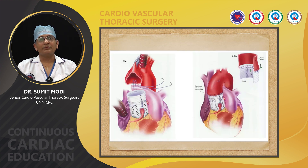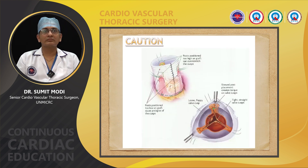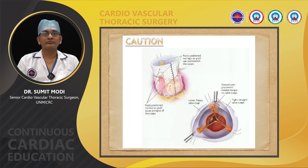The distal end of the prosthetic graft is sutured to the proximal arch with 4-0 or 5-0 Prolene suture in a continuous or semi-continuous fashion. Re-warming is started, de-airing is performed, and the cross-clamp is removed. We come off bypass at 35 degrees Celsius and assess the competency of the aortic valve through transesophageal echocardiography.